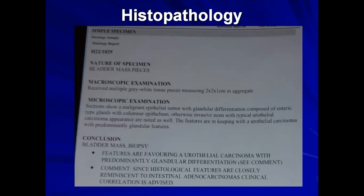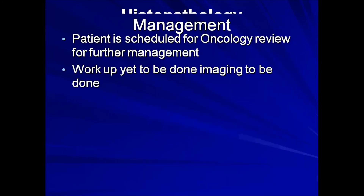Based on these lab findings, even without histology, the results point to a possible malignancy. The biopsy yielded a 2 by 2 by 1 centimeter aggregate, and the section showed malignant epithelial tumors in keeping with the typical invasiveness of urothelial carcinoma. In conclusion, the sonographic features confirmed on biopsy indicate a urothelial carcinoma or transitional cell carcinoma. The patient is scheduled for review with oncology for further management.